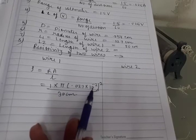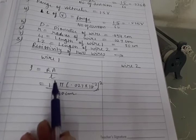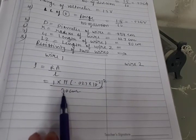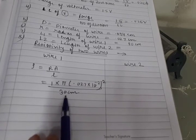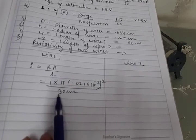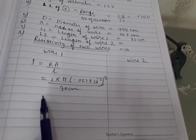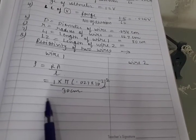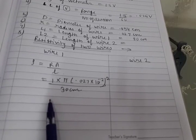So radius is 0.027 into 10 raise to power minus 2 in meter. We will put it and length is also given, length means length of that wire which we have connected that is 30 centimeter will convert this also in meter. This way substituting all the values in SI units will calculate resistivity of the first wire.